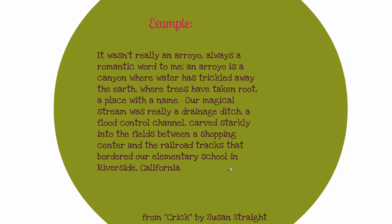Here's an example from a professional essay by Susan Strait called 'Crick,' where she begins with a general description of the canyon where she used to play as a child: 'It wasn't really an arroyo — always a romantic word to me. An arroyo is a canyon where water has trickled away the earth, where trees have taken root, a place with a name. Our magical stream was really a drainage ditch, a flood control channel carved starkly into the fields between a shopping center and the railroad tracks that bordered our elementary school in Riverside, California.'